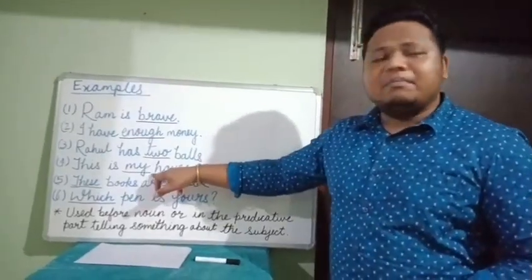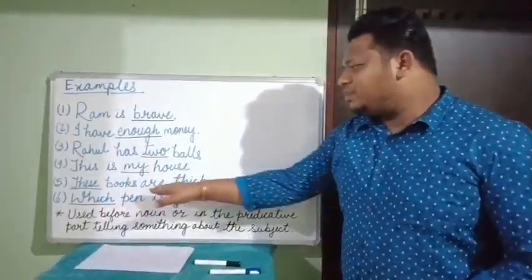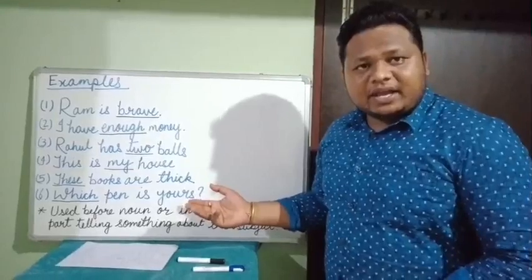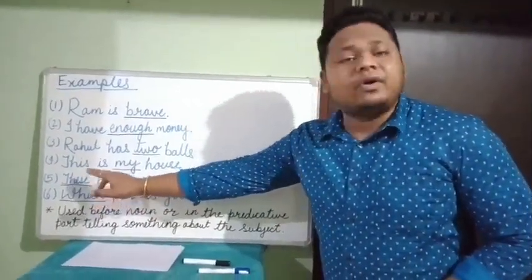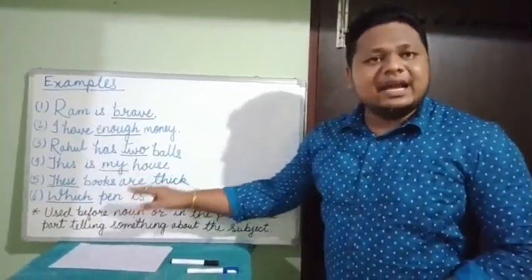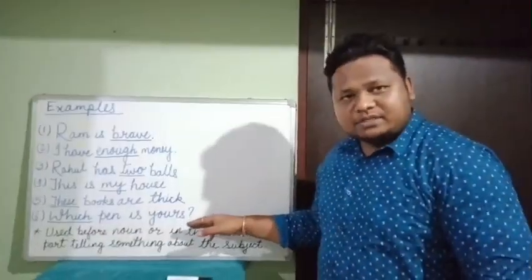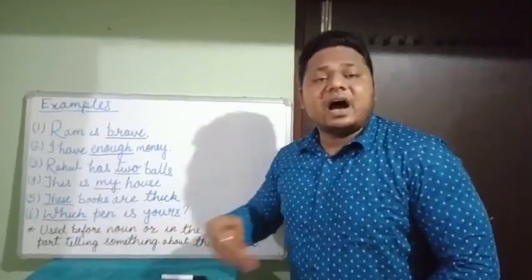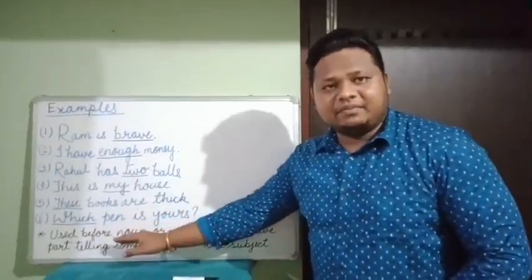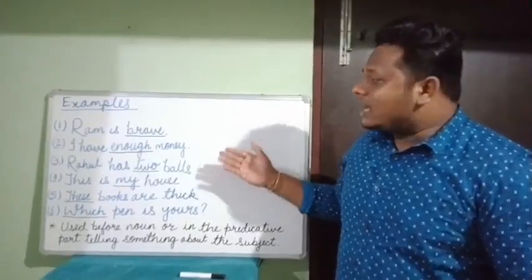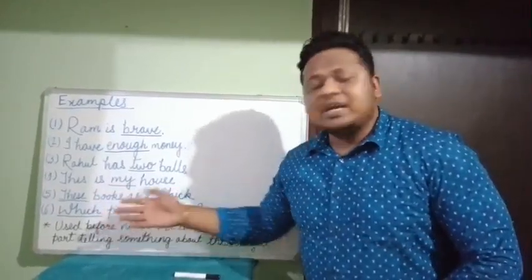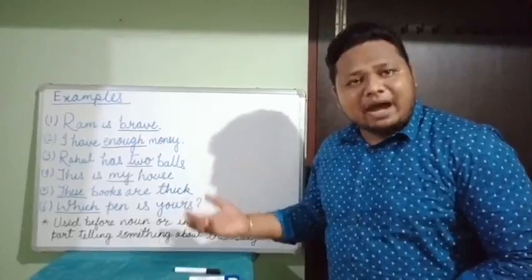These books are thick — if you ask 'which books are thick?' you get the answer 'these', so 'these' is an adjective here. Which pen is yours? — the word 'which' is asking about the pen, so 'which' is an adjective here. In all these sentences we saw how the words brave, enough, two, my, these, and which are telling something about their respective nouns. So all these words are adjectives.